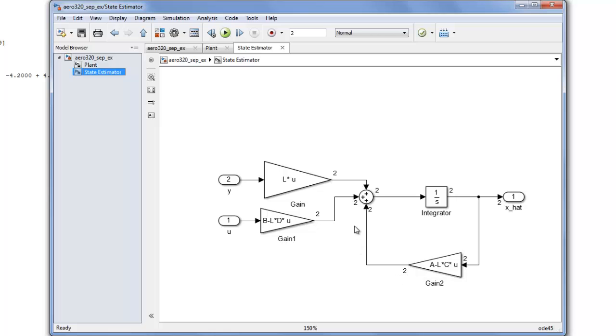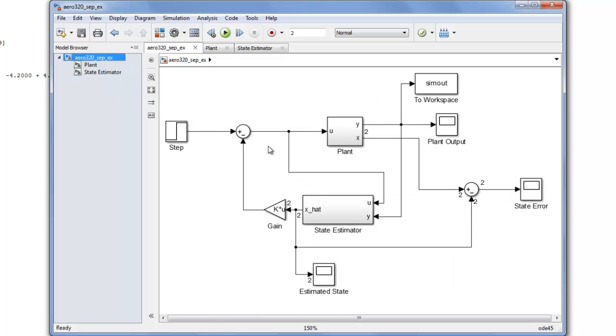And my state estimator I built this way. It's a little bit different than what I drew on paper, but it also includes the D term. And then overall though, we have this whole system. And this is just using the subsystem block that you can find in the block library explorer.